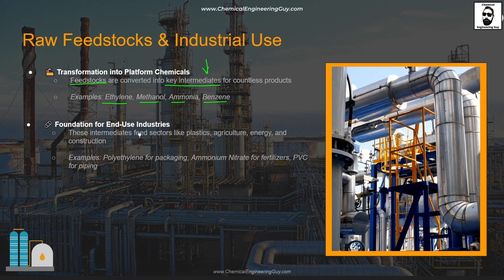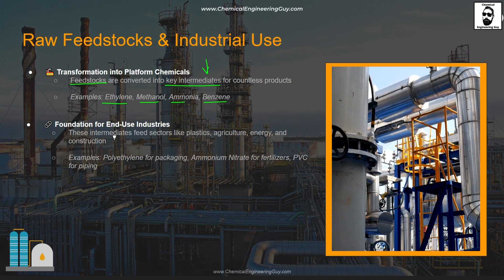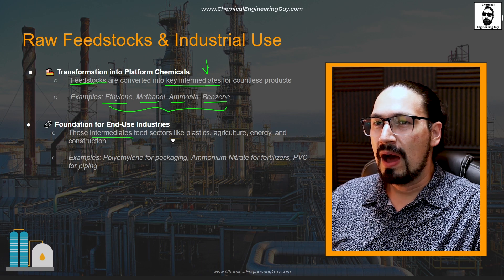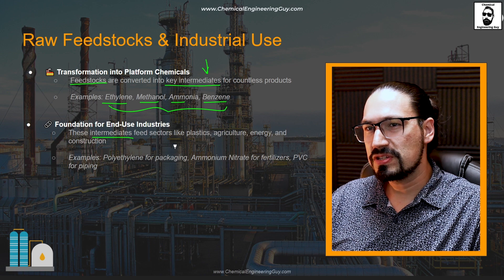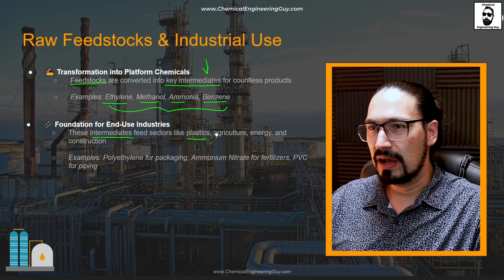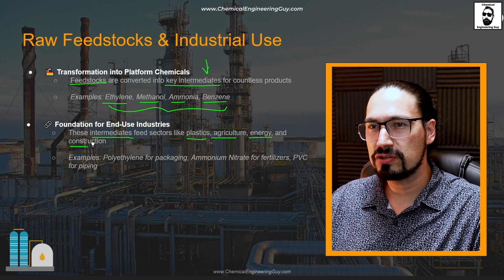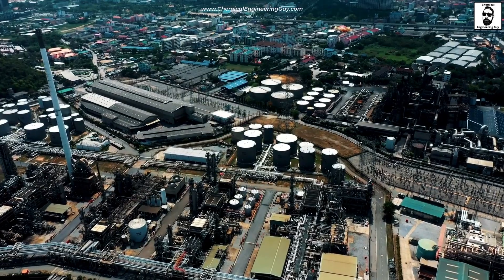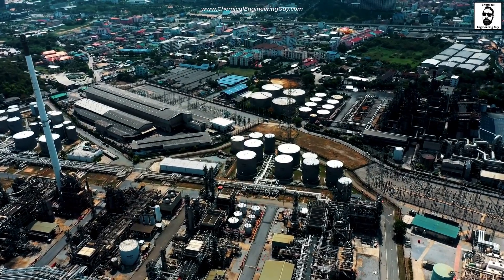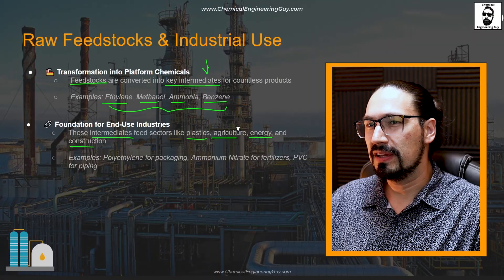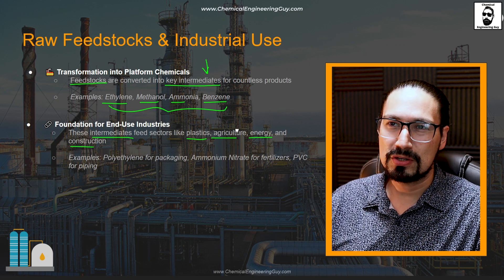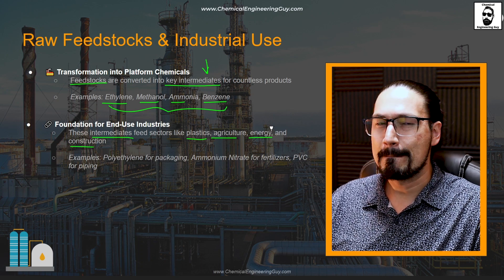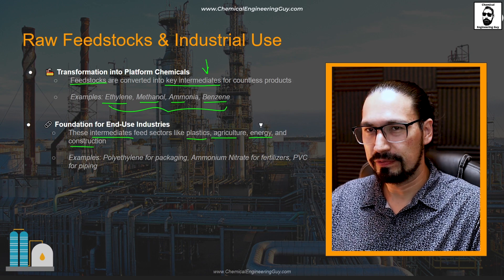The foundation for end-use industries is quite relevant. These intermediates are going to be the feed for several sectors, such as plastics, agricultural, energy, and construction. A good example: if you're going to be making polyethylene, you're going to require ethylene. If you're in the agricultural industry, maybe you're going to be using ammonia. Or if you're in the energy industry, maybe gasoline could be a good fit.